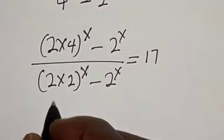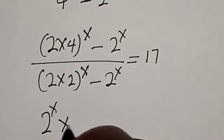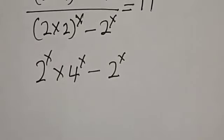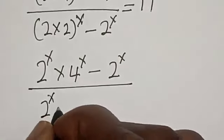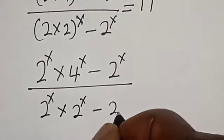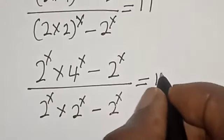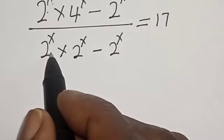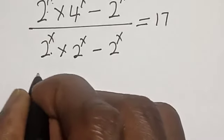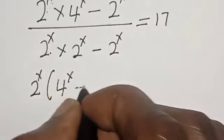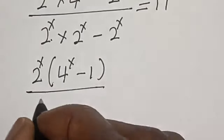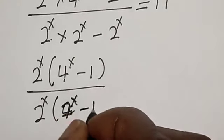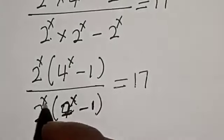Now, opening the bracket by power s, we have 2 raised to power s multiplied by 4 raised to power s, minus 2 raised to power s, divided by 2 raised to power s multiplied by 2 raised to power s, minus 2 raised to power s, equals 17. We factor out 2^s to get 2^s times (4^s minus 1) divided by 2^s times (2^s minus 1), equal to 17.